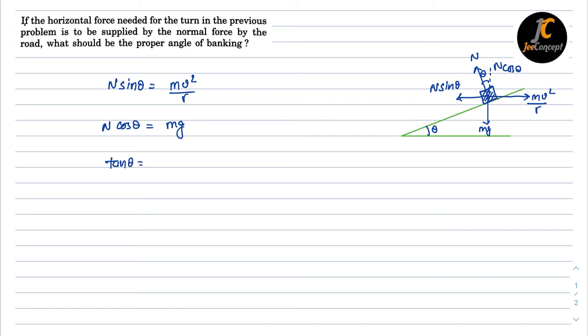From the previous problem, v was 10 meters per second, and the radius was 30 meters. Now putting the values here, we will get tan theta equals 10 square upon 30 into 10.